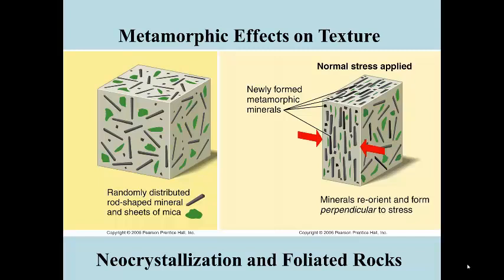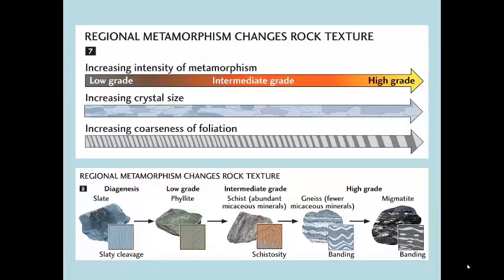Basically, the crystals are growing where there's the least possible resistance, which is perpendicular to the principal stress or principal force acting on that rock. That's the metamorphic effect on texture. If we look at how the texture changes from low-grade to intermediate-grade to high-grade, the crystals get bigger as we increase the metamorphic grade. As we increase the temperature and pressure, individual crystals become larger. If we look at the degree of foliation, foliation is subtle within low-grade metamorphic rocks, and it becomes increasingly distinct as the grade of metamorphism increases.